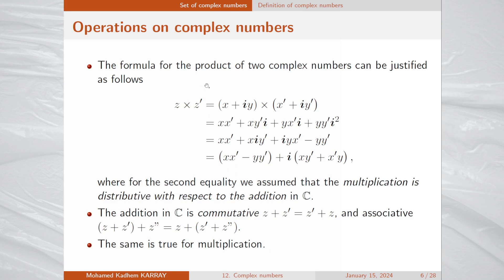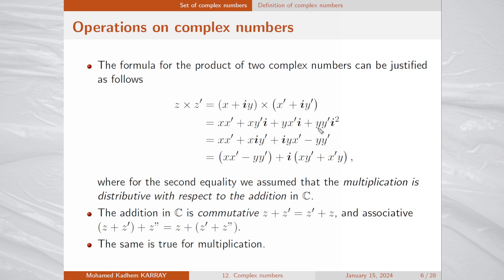Let's justify the formula of the product of two complex numbers. Making the product z by z prime, assuming multiplication is distributive with respect to addition, we get four terms. Using the fact that i squared equals minus 1, we transform the last term to get minus y·y prime. The basic assumption to get this expression is that multiplication is distributive with respect to addition in C.